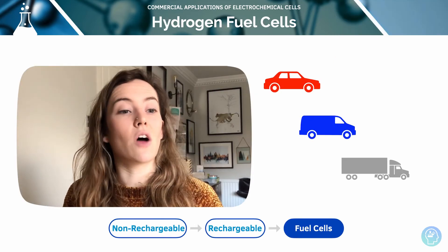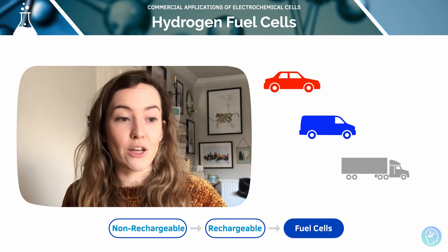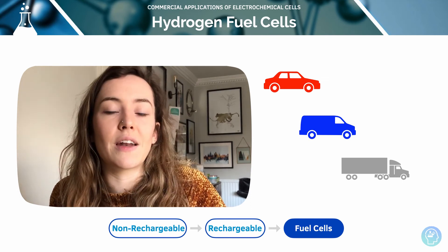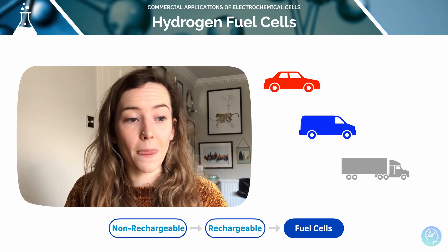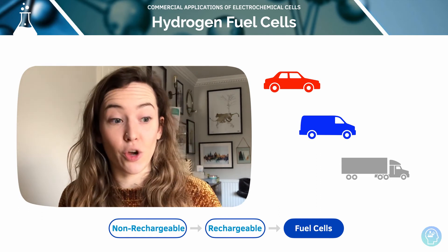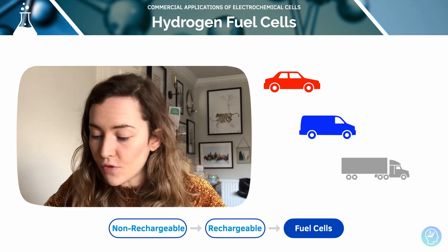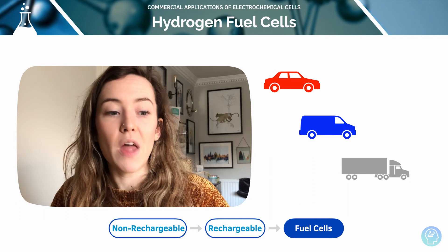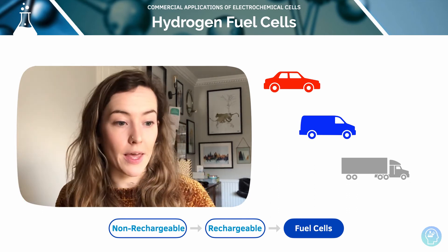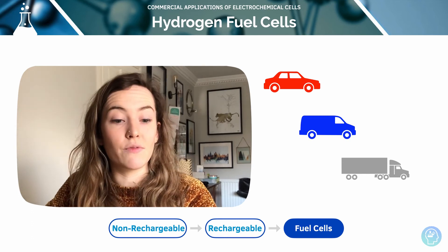Our final type of cell is the hydrogen fuel cell. Fuel cells produce electricity by using fuel. In a hydrogen fuel cell, hydrogen is used at the negative electrode and oxygen at the positive electrode. They can be used to run cars and vehicles, and as long as there's a constant supply of fuel, the cells can operate continuously. Fuel cells can also use an acidic electrolyte.